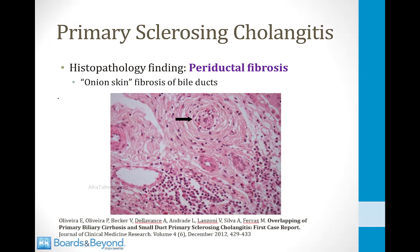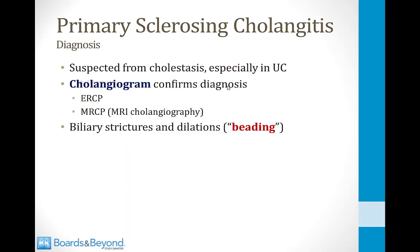If you do a biopsy of the bile ducts, the characteristic finding is called periductal fibrosis, also called onion skin fibrosis of the bile ducts. You can see fibrous tissue laid down in circles around the bile duct, creating the appearance of an onion skin. This diagnosis is often suspected in someone who has established ulcerative colitis and then develops cholestasis — if someone with known ulcerative colitis develops jaundice and a high alkaline phosphatase, you can suspect sclerosing cholangitis.